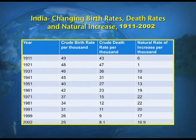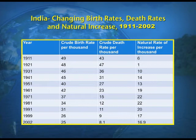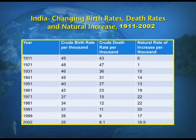In 1921 the natural increase was only 1, and in 1931 it was 10. The highest natural rate of increase in the table occurred in 1971 and 1981. In those years, birth rates were very high at 37 and 34 respectively, while death rates had declined greatly to 15 and 12, resulting in a natural rate of increase of 22 per thousand for both years.